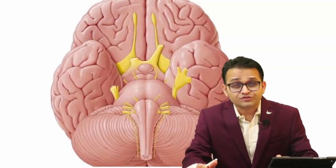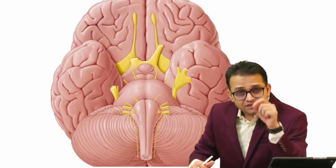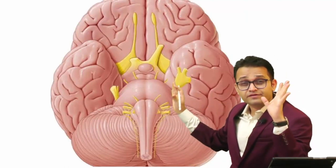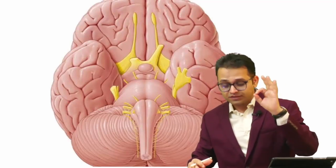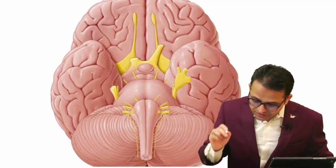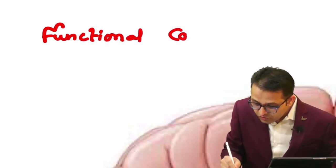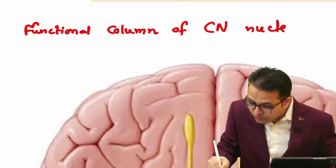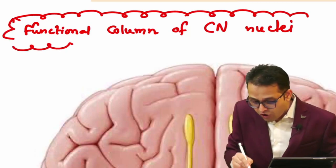We are going to look at our cranial nerves. This is our neuroanatomy part. In our brain, the cranial nerves are arranged in a beautiful manner. God created our body very beautifully. The topic is 'Functional Column of Cranial Nerve Nuclei.' This is one of the most difficult topics not only in anatomy but among all 19 subjects.